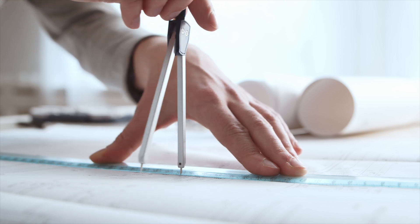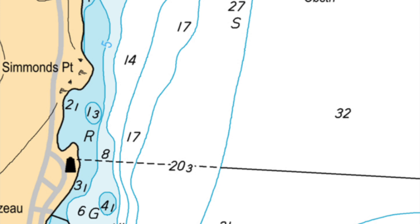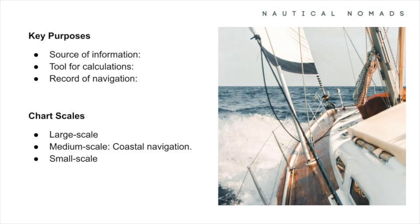A nautical chart is more than just a map — it's a navigator's best friend. Designed specifically for use at sea, it provides critical information like water depths, hazards, and navigational aids such as lighthouses and buoys. Nautical charts have three main purposes: they are a source of information, giving you the data you need to understand your surroundings; a tool for calculations, helping you plot routes, measure distances and estimate travel times; and a record of navigation, where you can document important events or updates during your voyage.